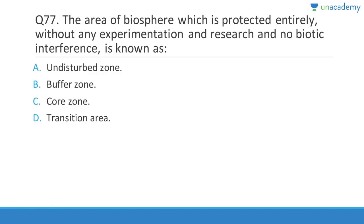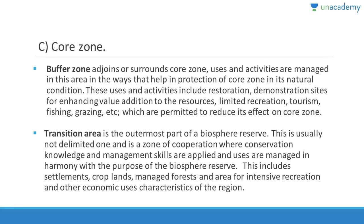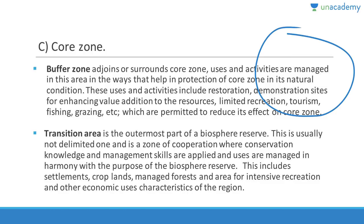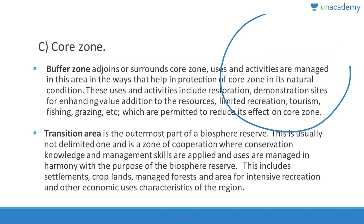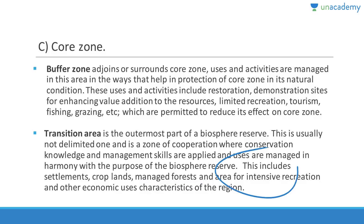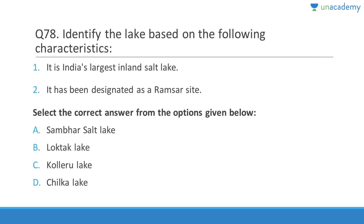Question 77: The area of a biosphere reserve that is protected entirely without any experimentation, research, or biotic interference is known as the core zone. The biosphere reserve has three layers — innermost is the core zone, outside is the buffer zone, and the outermost is the transition zone. The transition zone is where all activities happen — settlements, croplands. The buffer zone lies between the transition and core zones, where activities are restricted: limited recreation, limited tourism, limited fishing, and grazing are permitted to reduce effects on the core zone.